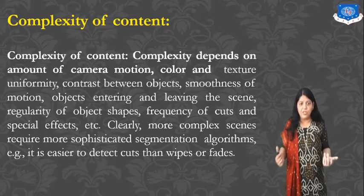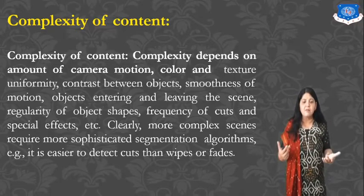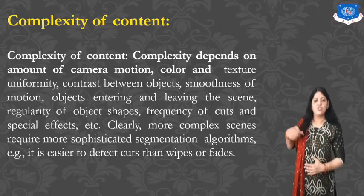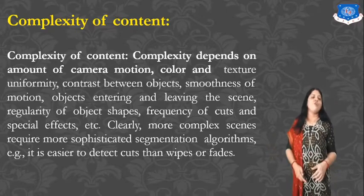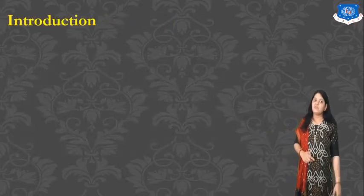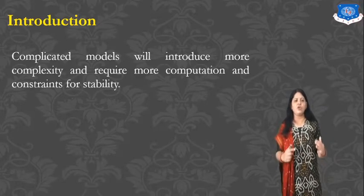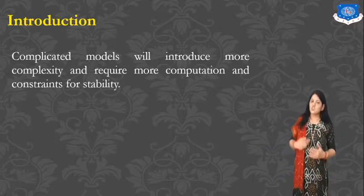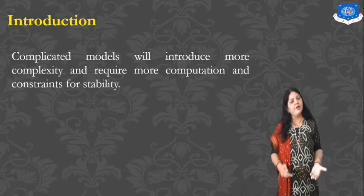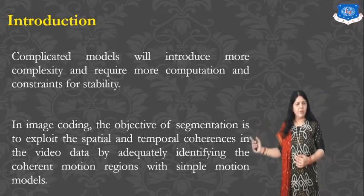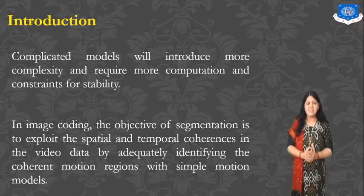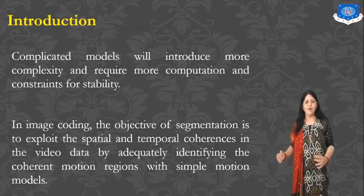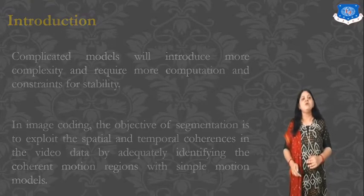If you don't find any similarity in your video, it becomes very complex to divide or segment the video into a number of regions. Therefore, it is easier to detect cuts than other types of effects. These are factors we need to consider. Complicated models will introduce more complexity and require more computation and a constraint for stability. More computation means more time is required for processing the video. In image coding, the objective of segmentation is to exploit the spatial and temporal coordinates in video data by adaptively identifying coherent motion regions with simple motion models.